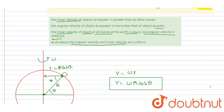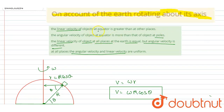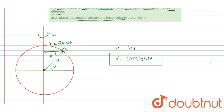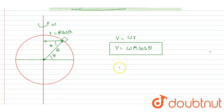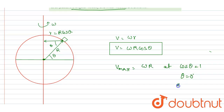The linear velocity of the object at the equator is greater than at other places. At the equator, theta is zero, cos(θ) equals one, so the linear velocity is simply omega·R — its maximum value. Therefore, the linear speed is maximum at the equator.